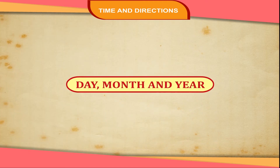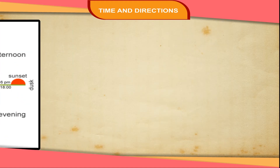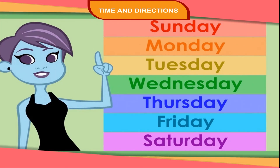Day, month and year. A day is divided into hours. There are 24 hours in a day. There are 60 minutes in an hour. There are 60 seconds in a minute. There are 7 days in a week.